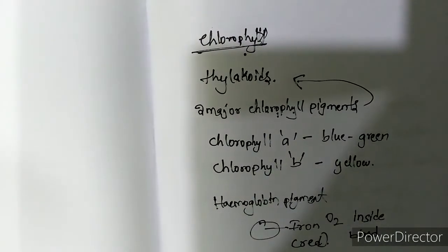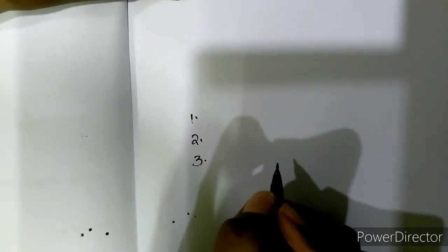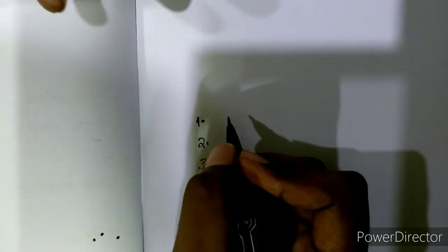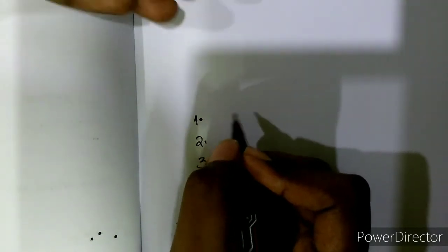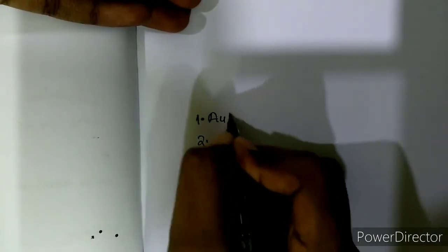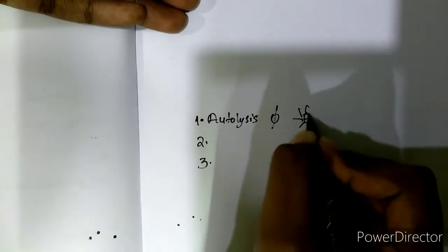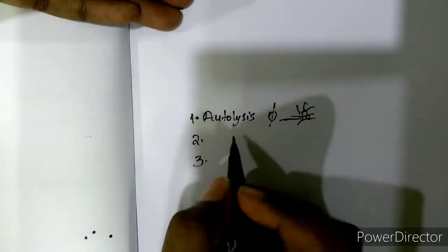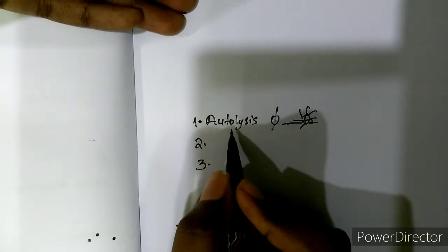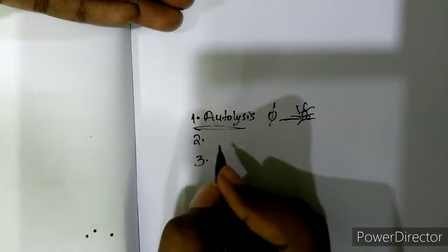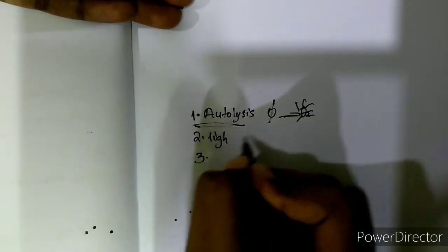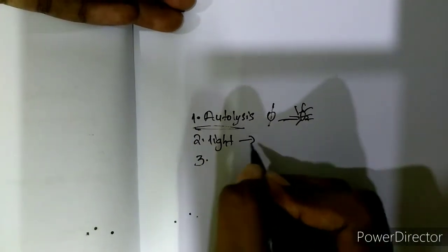Now we will see some of the functions of chloroplast during photosynthesis. The first function: as I explained in my previous video about photosynthesis, autolysis — the splitting of water molecules in the presence of sunlight — is also one of the functions of chloroplast.